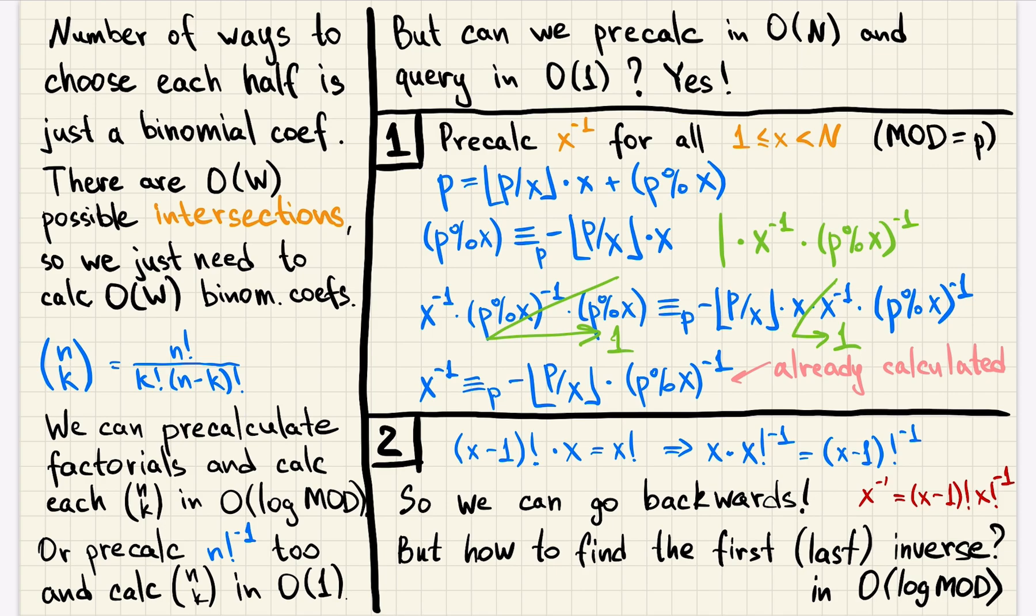The second method. It is specific for factorials. So let's look at this equation, which is basically the definition of the factorial, right? x factorial is x minus 1 factorial multiplied by x. But then we can divide both sides by x factorial and x minus 1 factorial. So we will get x times inverse of x factorial is equal to inverse of x minus 1 factorial.